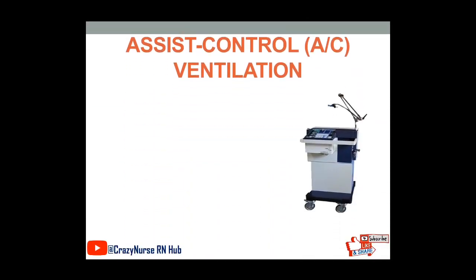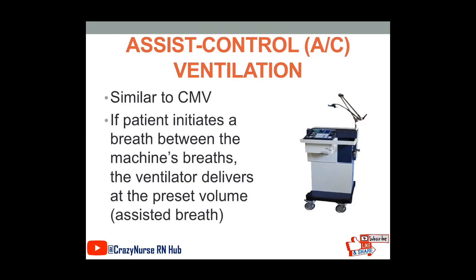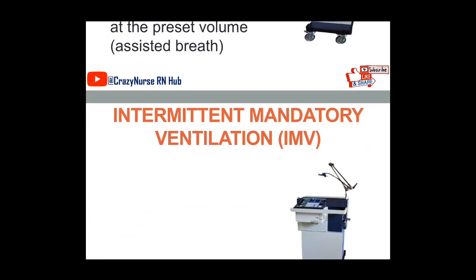For assist control or AC ventilation, it is similar to CMV. However, if the patient initiates a breath between the machine's breaths, the ventilator delivers at the preset volume — this is called an assisted breath. In assist control ventilation, the patient can somehow breathe partially, but the machine will still give its preset volume of air to the patient.